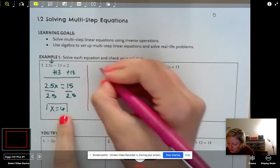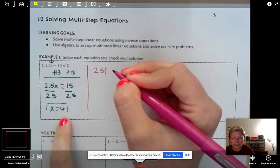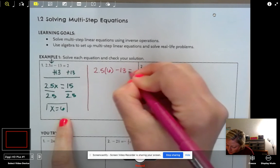So if we're saying x is 6, we can plug in. So let's see here. 2.5. Instead of writing x, let's plug in what we got for x, which is 6 minus 13 equals 2.